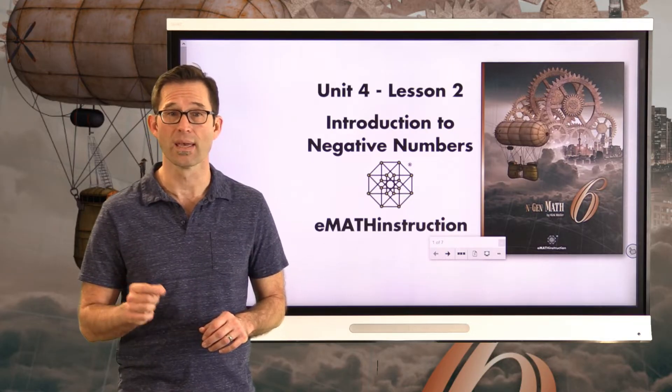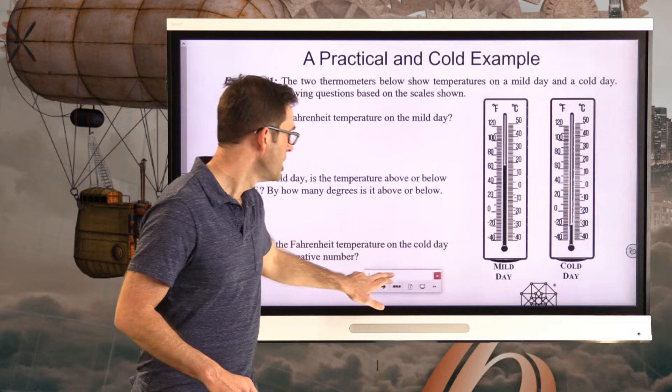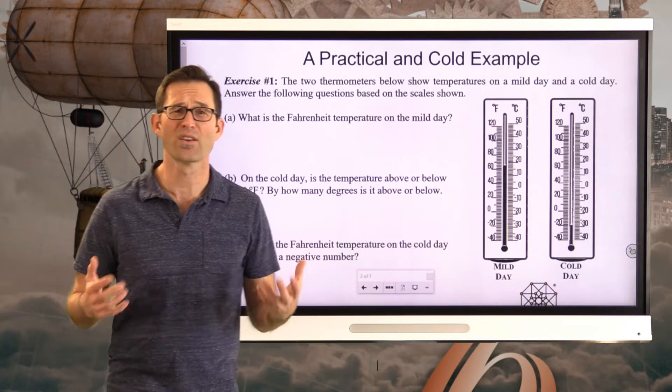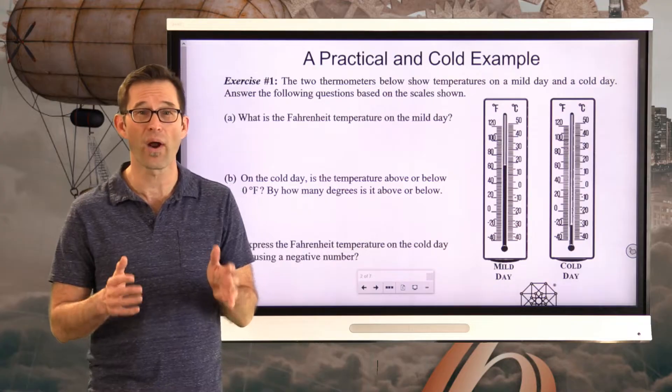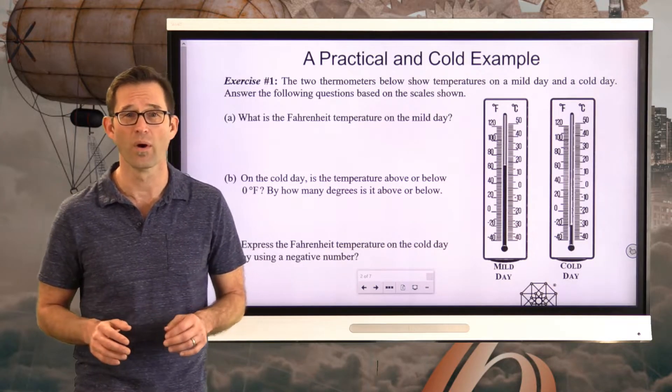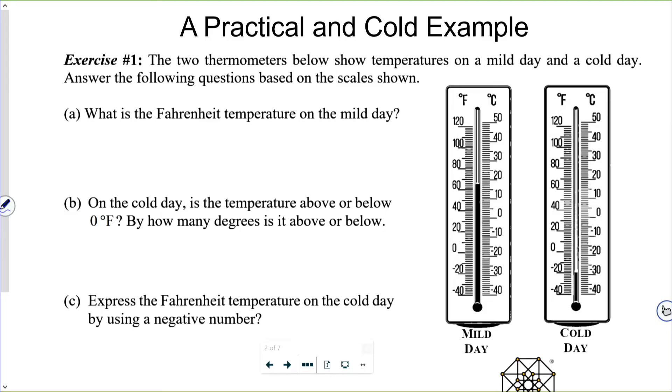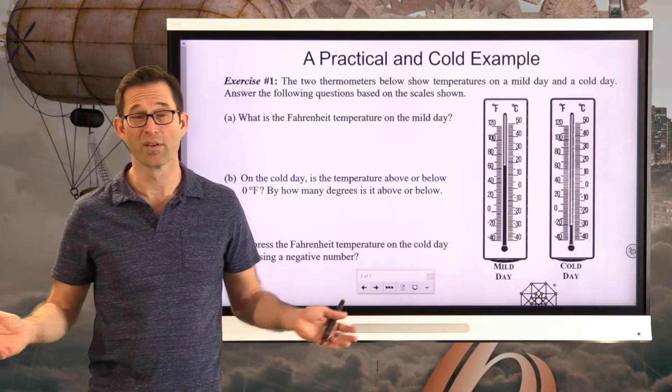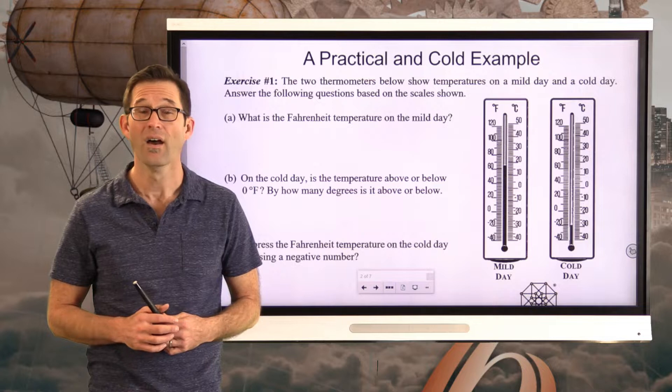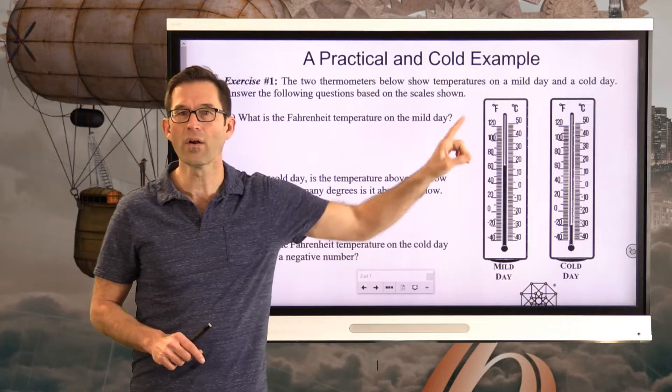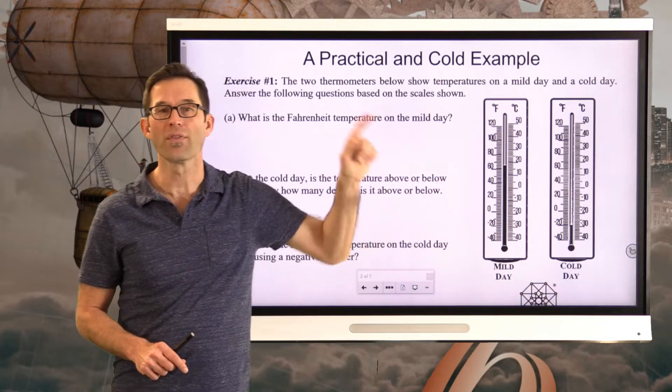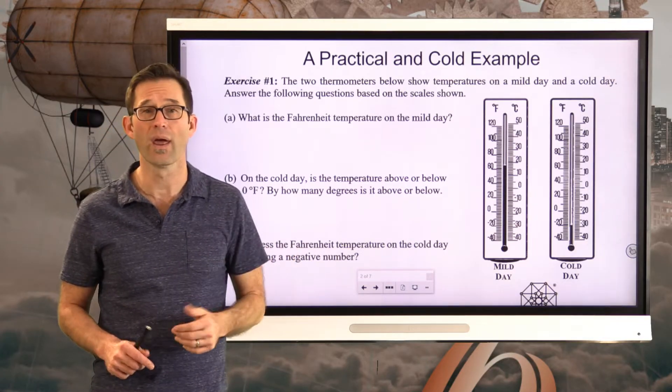So let's get right into it with a practical example. If you're from Southern California, you might have no connection to a problem like this, but I hope you've still looked at a thermometer before. So let's take a look at a practical and very cold example. Exercise number one. The two thermometers below show temperatures on a mild day and a cold day. Answer the following questions based on the scale shown. Letter A, what is the Fahrenheit temperature on the mild day? Take your best estimate of what the Fahrenheit temperature is on the mild day. Pause the video now and see if you can figure that out.